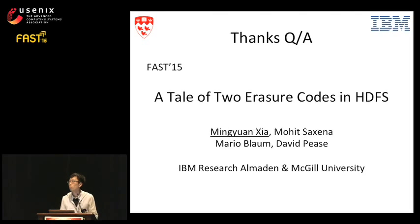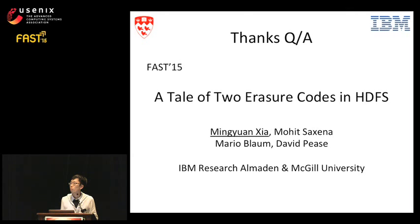Audience (Brent Welch, Google): I think you're trading off reliability for recovery time. In the product code you pictured, it's not three-fault tolerant, but you're comparing it against a 6/3 encoding which is three-fault tolerant, or a 14/10 encoding which is four-fault tolerant. Are you comparing codes with the same redundancy? Speaker: The 2x5 and 6x5 product codes are both three-fault tolerant, the same as the LRC used in Windows Azure and the 9/6 used in Google Colossus.